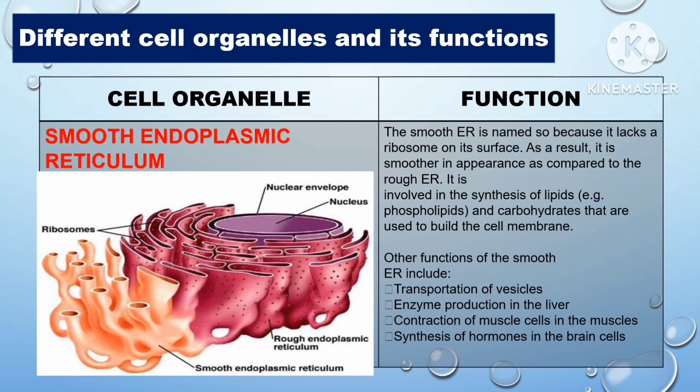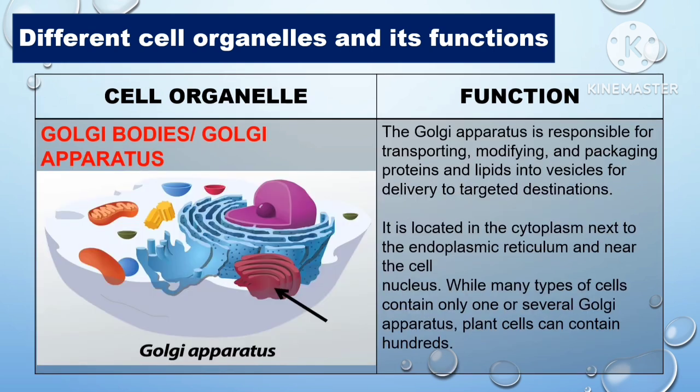Other functions of the smooth endoplasmic reticulum include: transportation of vesicles, enzyme production in the liver, contraction of muscle cells, and synthesis of hormones in brain cells. Another cell organelle is the Golgi apparatus. It is responsible for transporting, modifying, and packaging proteins and lipids into vesicles for delivery to targeted destinations. It is located in the cytoplasm next to the endoplasmic reticulum and near the cell nucleus. While many cell types contain only one or several Golgi apparatus, plant cells can contain hundreds.